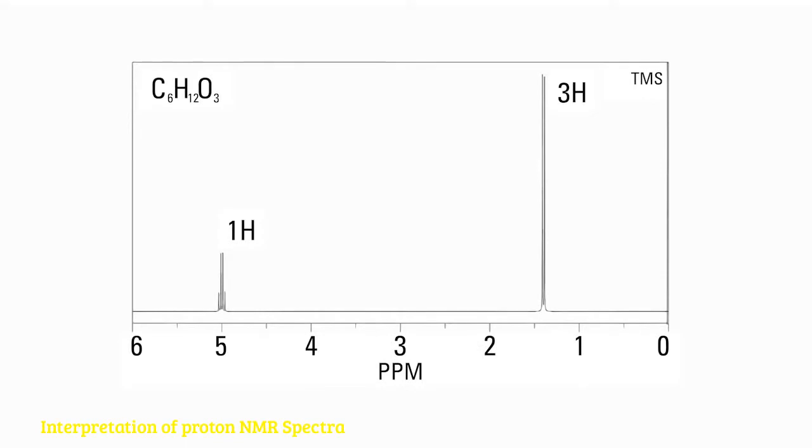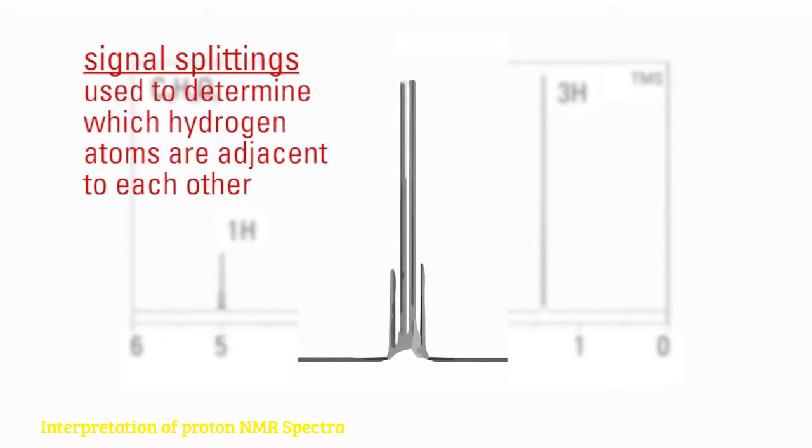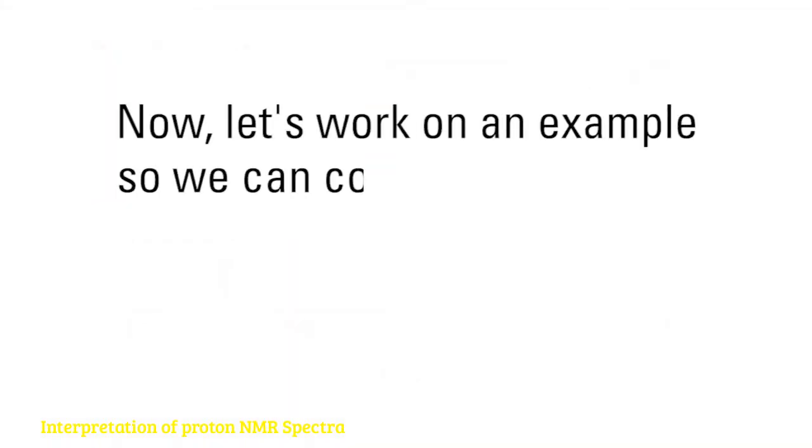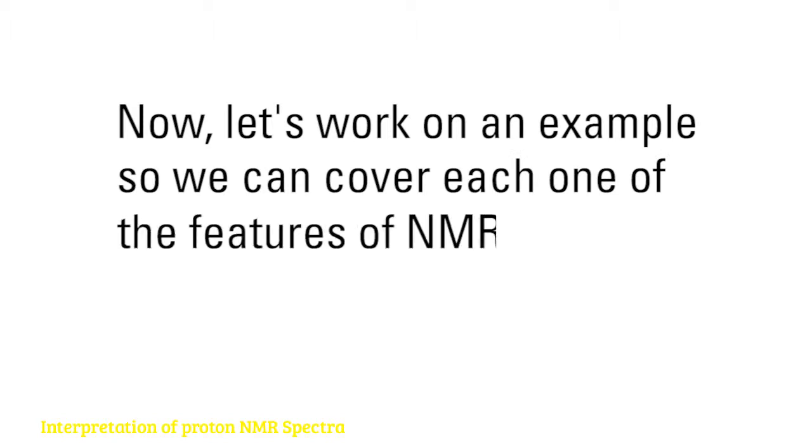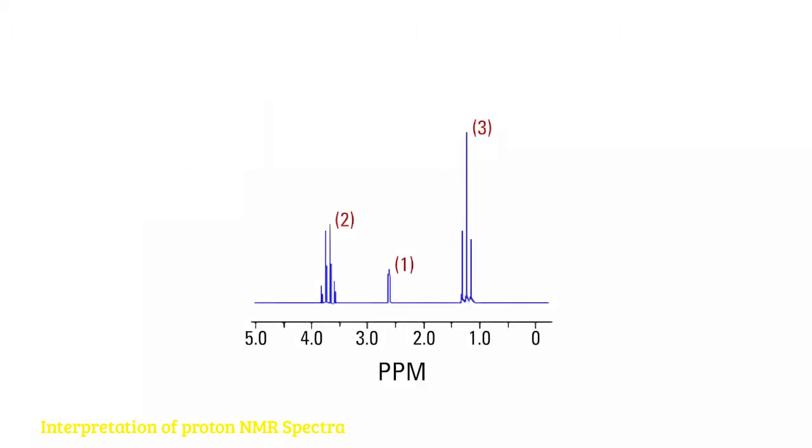Finally, you will use the signal splittings to determine which hydrogen atoms are adjacent to each other. Now, let's work on an example so we can cover each one of the features of NMR spectra. Our example will be this spectrum for a compound with the molecular formula C2H6O.